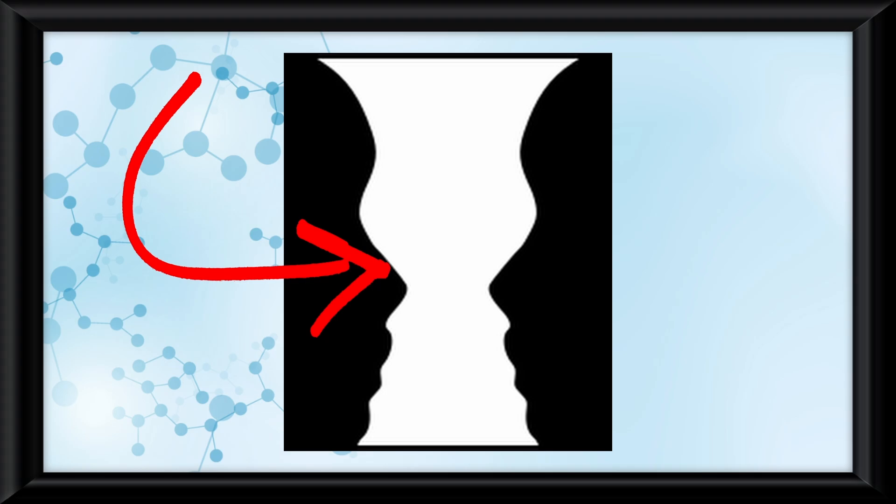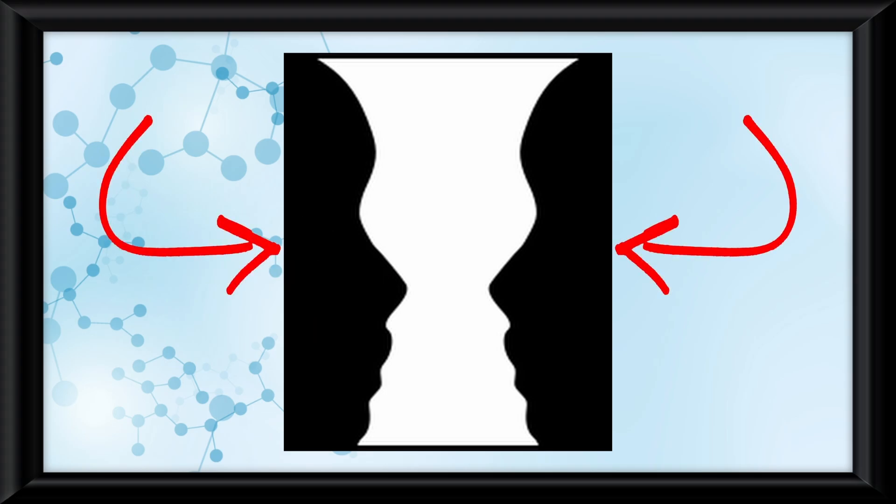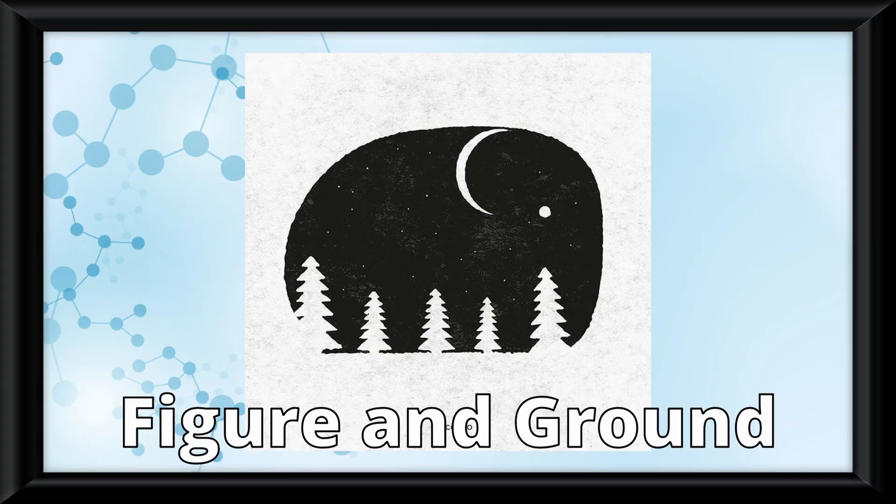In this image, if you focus on the white color, you will see a vase, but if you focus on the black color, you might see two faces. This is called figure and ground, because you're assigning one over the other as a figure and background.